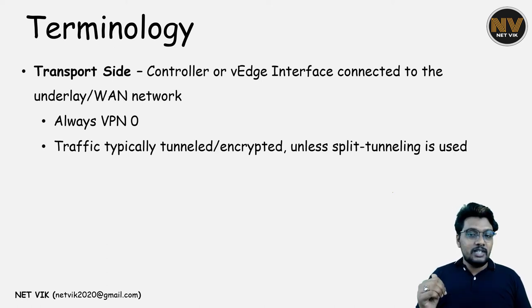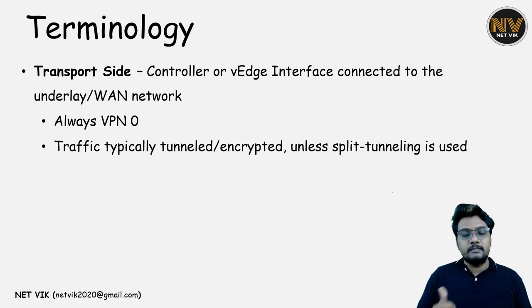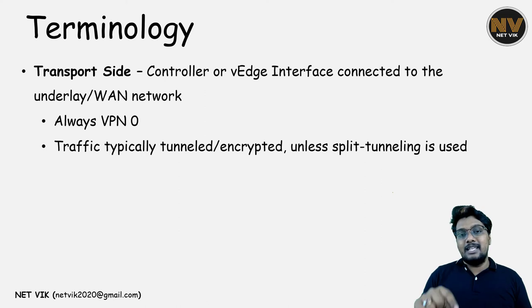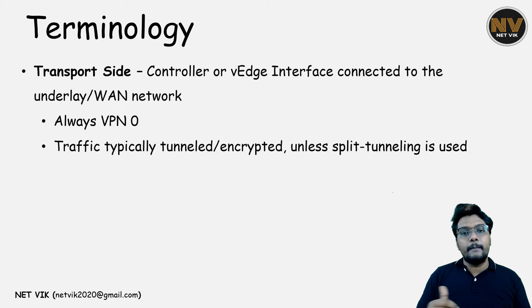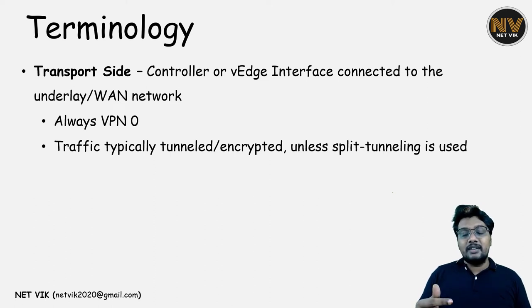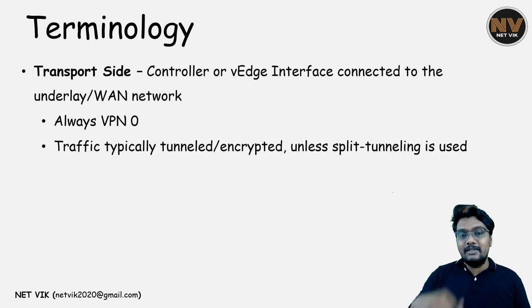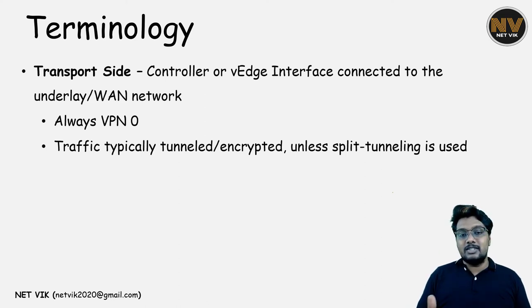The transport side — this is the place where the WAN links get connected. We will also call these connectivities the underlay connectivity or underlay network, because only on top of this path will the SD-WAN routers form the overlay tunnels — the IPsec tunnel or DTLS tunnel. This transport VPN is always VPN0 and this is where traffic gets encrypted and tunneled to other sites. There is also an option to send specific traffic natively on the WAN link, which is called DIA — Direct Internet Access — in Cisco SD-WAN terms.